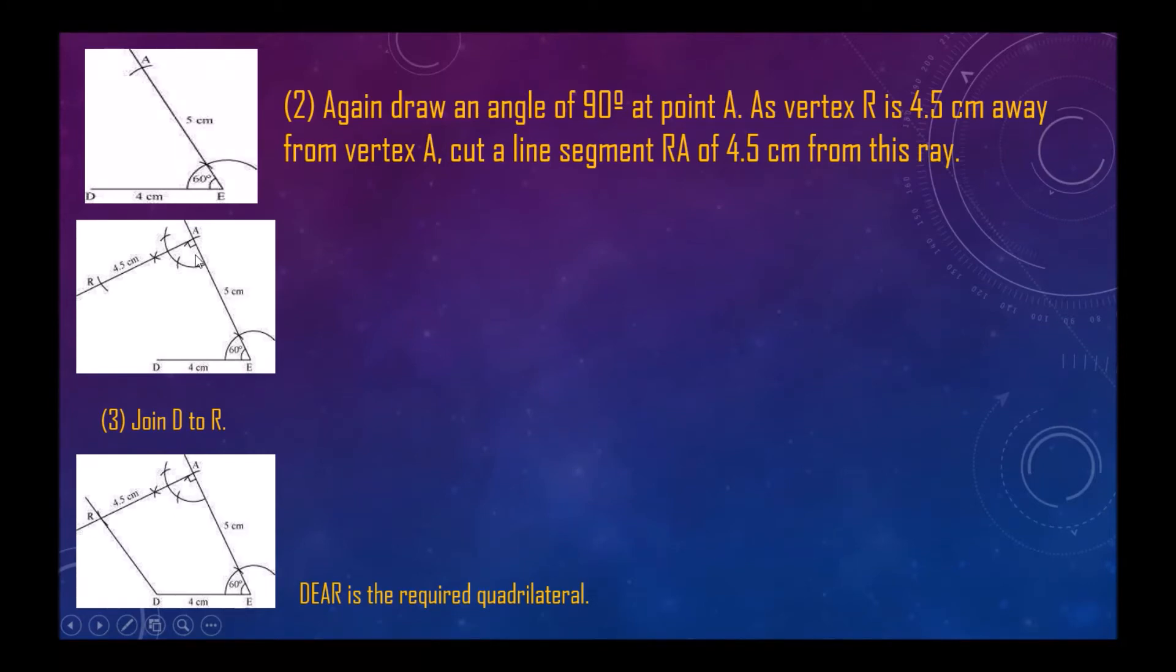As vertex R is 4.5 centimeter away from vertex A, cut a line segment RA of 4.5 centimeter from this ray. So we have drawn 4.5 centimeter. Now join D to R.